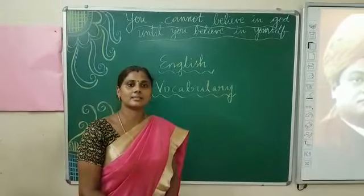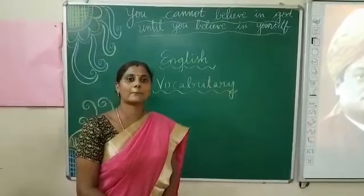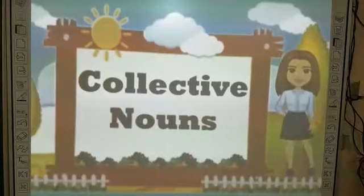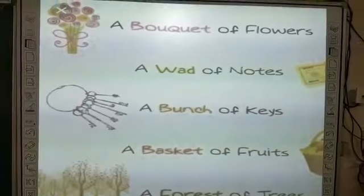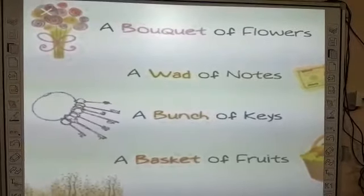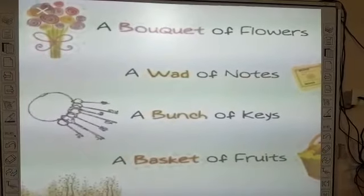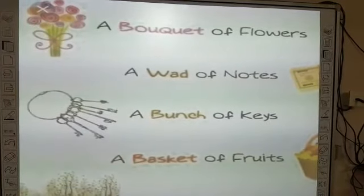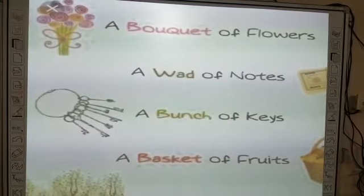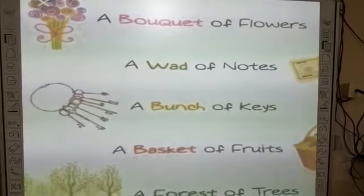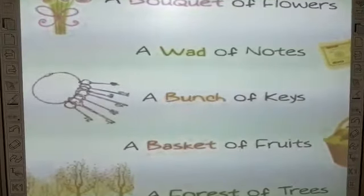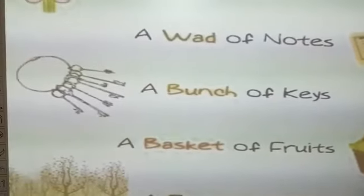Let's start today's class with collective noun. This is the workbook exercise, children — workbook vocabulary. All are familiar with the collective noun. Now I am going to show a few collective nouns to recall the previous class. What is a flower? A bucket of flowers — the bucket is a collective noun. A group of people, things or animals — the word we use there is a collective noun. A bunch of bees. A basket of hoops. The forest of trees.